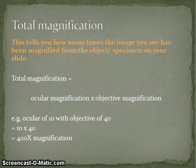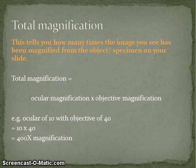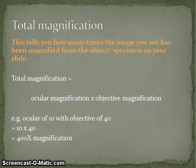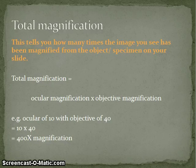Let's define what total magnification is. Total magnification is the number of times that the image you see when you look down the lenses has been magnified in comparison to whatever is sitting on your slide. That's the ocular magnification times the objective magnification. So if you're looking down an ocular lens with 10x magnification and using your medium power 40x objective lens, you have a total of 400x magnification.